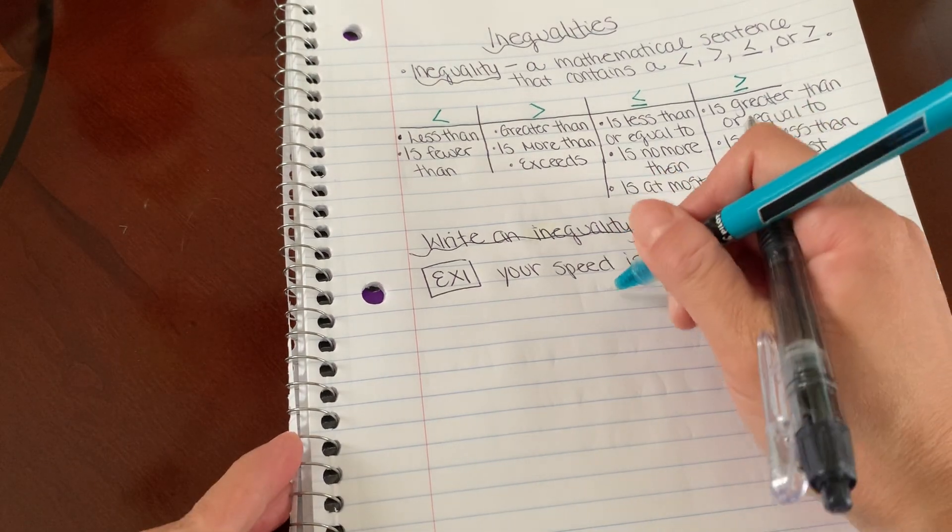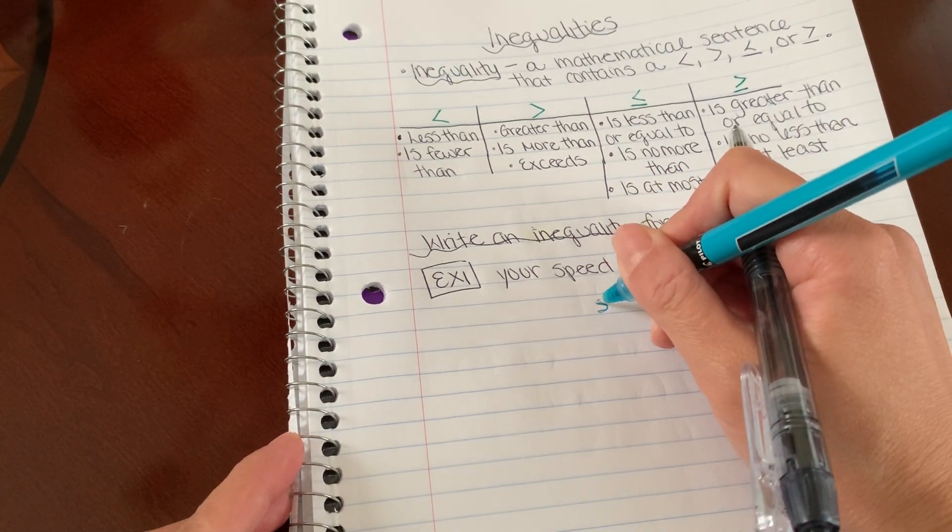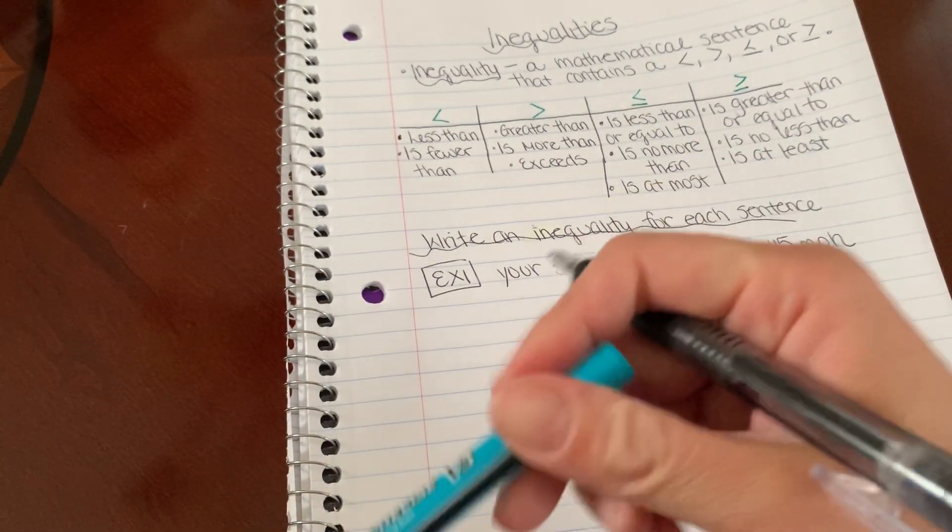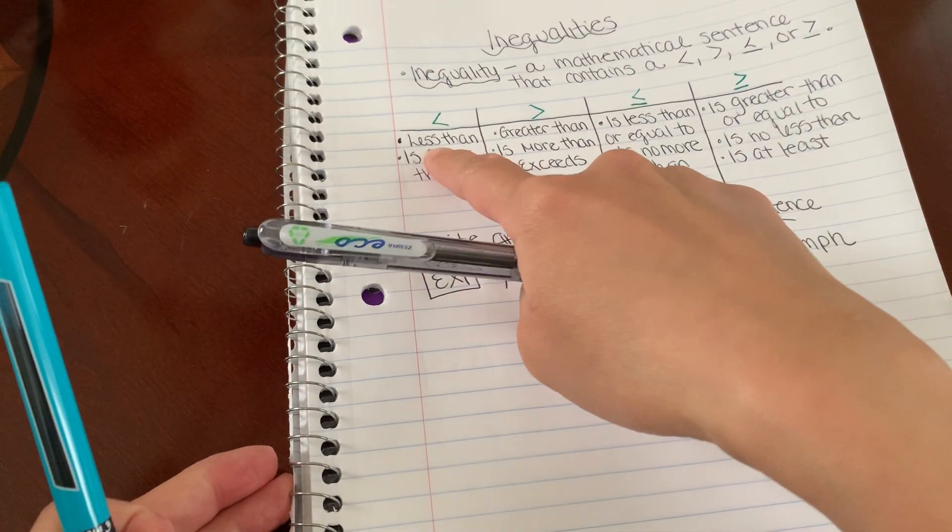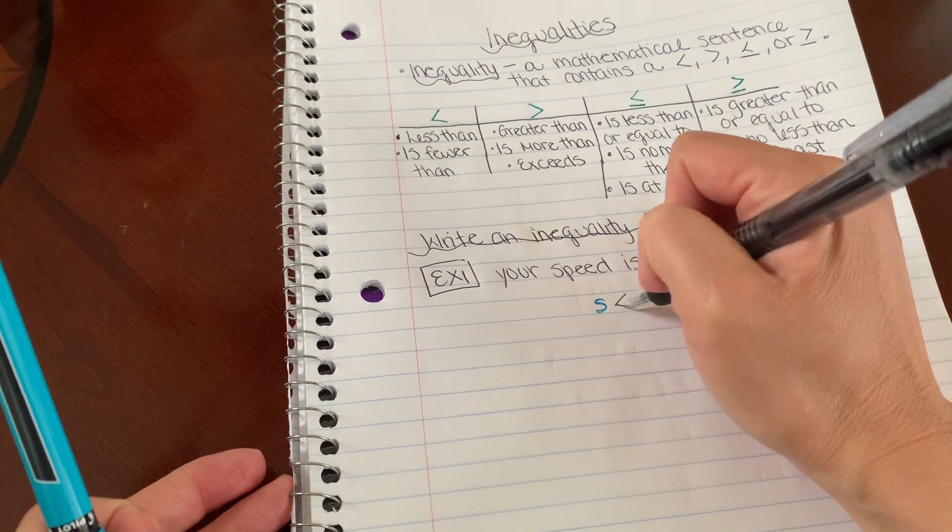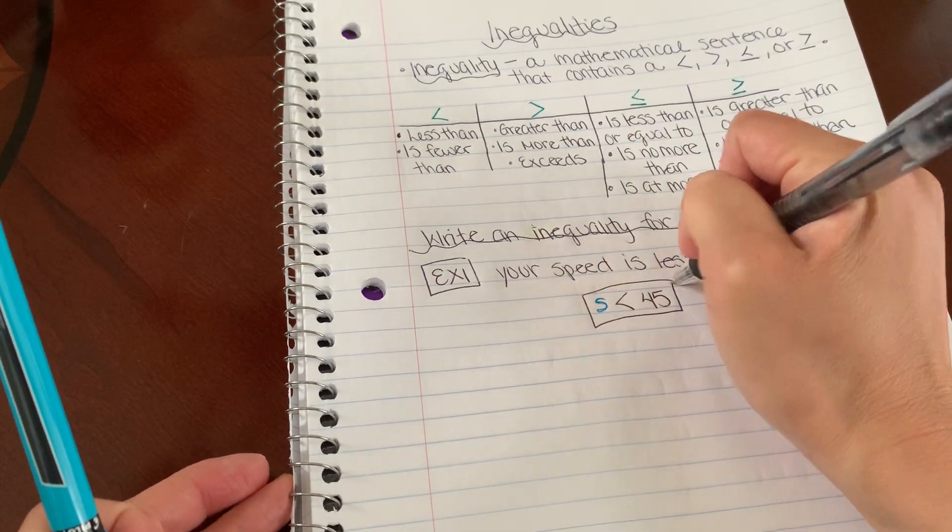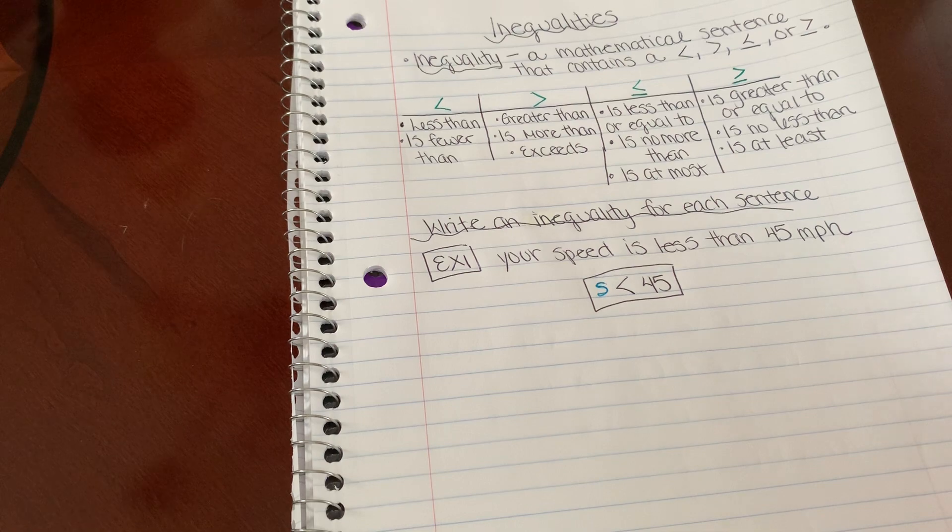So I'm going to use a variable. I'm just going to use S for speed because it could be anything, but I do know it is less than 45. So what is my symbol for less than? Here it is, less than 45 miles an hour. Boom.